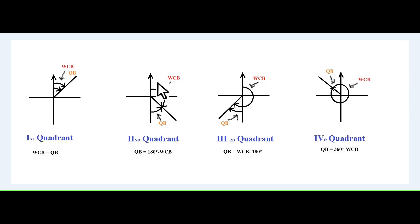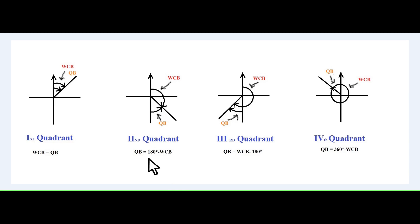Now let's see the 2nd quadrant. In the 2nd quadrant, for whole circle bearing, the angle is measured from the magnetic north in clockwise direction towards the line. But in case of the quadrantal bearing or reduced bearing, the angle is measured from the south since the line is more nearer to the south. Hence, the angle is measured in the anti-clockwise direction. To convert whole circle bearing into quadrantal bearing for the 2nd quadrant, the quadrantal bearing is equal to 180 degrees minus the whole circle bearing.